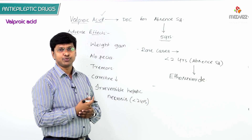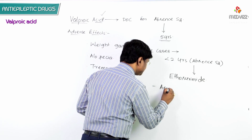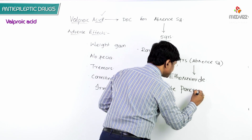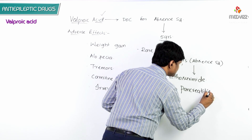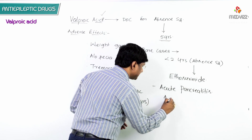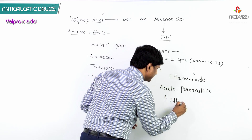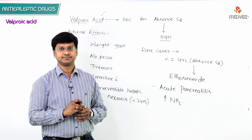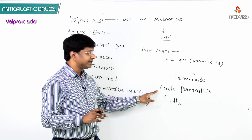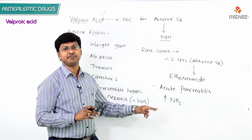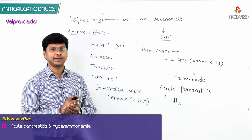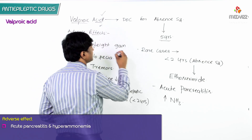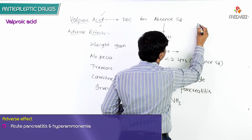Other frequently associated adverse effects of valproic acid include acute pancreatitis and hyperammonemia — that is, an increase in blood ammonia levels.